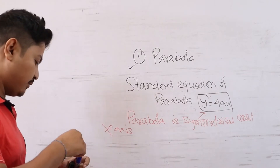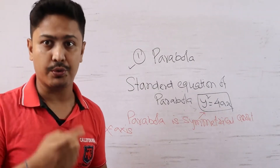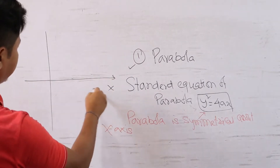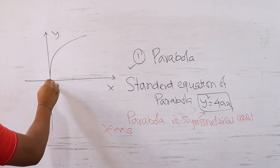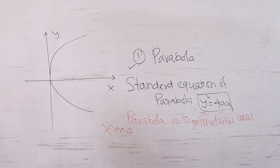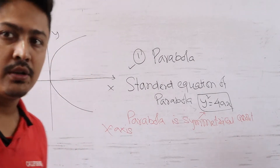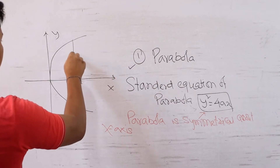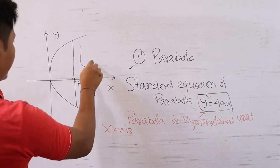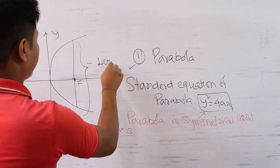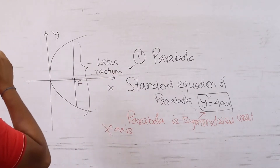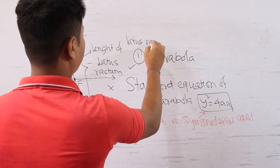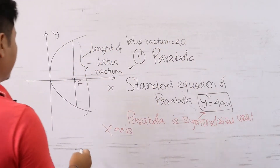For this parabola equation, we will draw the parabola shape. This is the x-axis and this is the y-axis. Related terminology: there is a point called the focus. We also have the latus rectum — the length of the latus rectum.